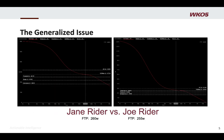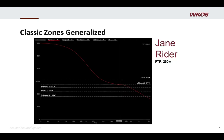Let's take a deeper look at the challenge of the generalized rule. This is a quick comparison of Jane Rider versus Joe Rider. Here you see the power duration curve of Jane and the power duration curve of Joe. They look similar but different. These two athletes have an FTP within five watts of each other. What you're seeing in general is these two athletes have been scaled to an adjusting scale.